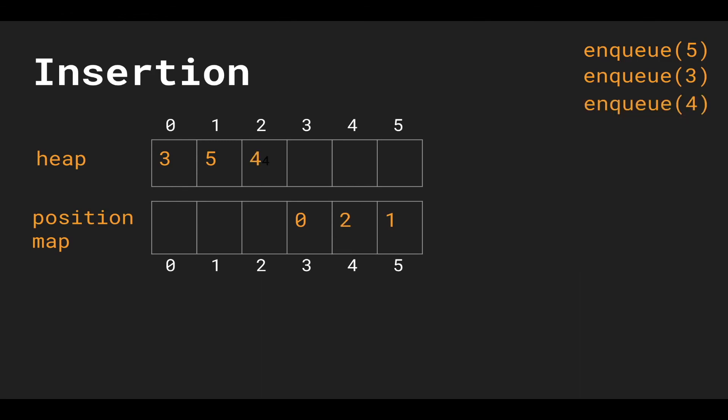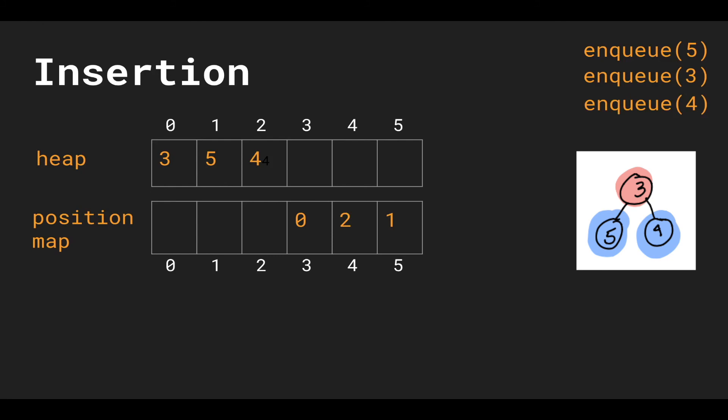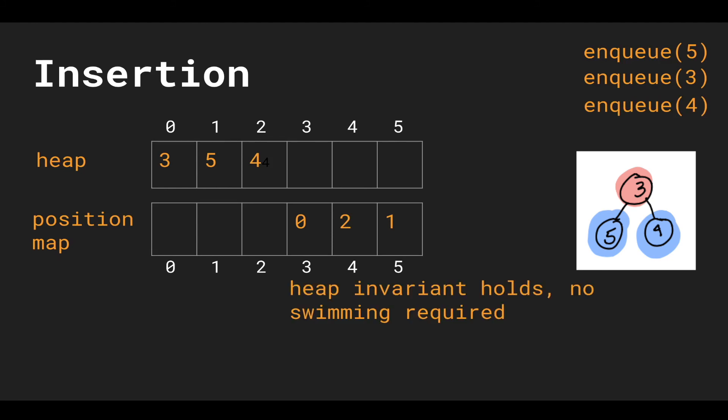Let's enqueue 4. We push it to the end of the heap array, and the heap invariant holds because 4 is greater than its parent, which is 3. No swimming is required, so we don't have to do any swapping on our position map. 4 is at index 2, so in our position map we have the value 2 at index 4.